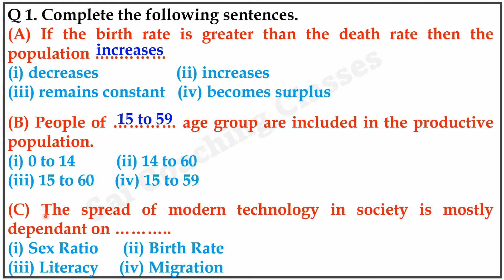Question C. The spread of modern technology in society is mostly dependent on — Answer: literacy.